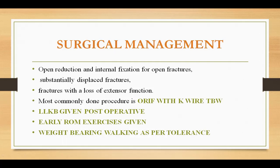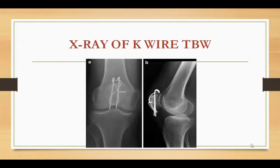For surgical management, open reduction and internal fixation is performed for displaced fractures. The most commonly done procedure is open reduction and internal fixation with K-wires and TBW — tension band wiring. After the operation, a long leg knee brace is applied, early range of movement exercises are given, and weight-bearing walking is allowed as per patient tolerance. In the postoperative X-ray, you can see the open reduction and internal fixation with K-wires and tension band wiring.